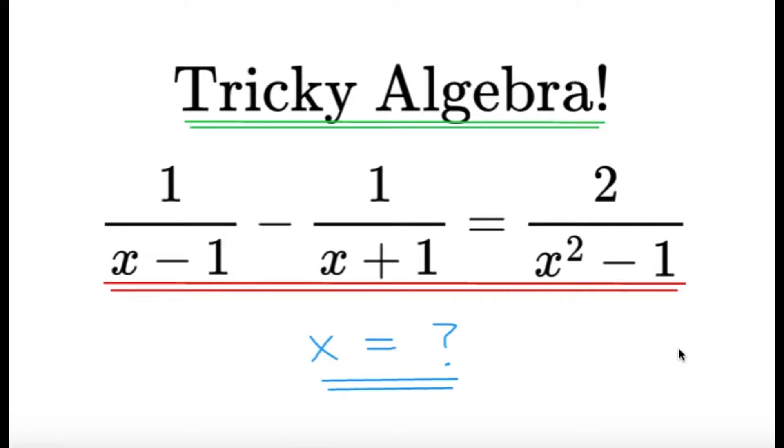Hello, hello! It's Dumplet here. Here's an item on algebra. Solve for x in the equation below: 1 over x minus 1 minus 1 over x plus 1 equals 2 over x squared minus 1.